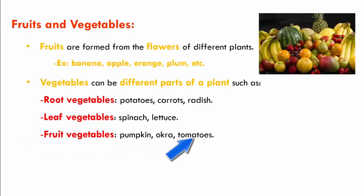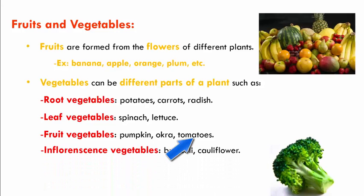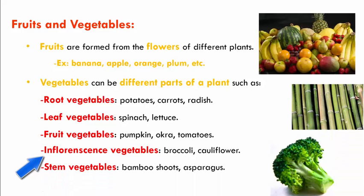Did you know tomatoes were fruit vegetables? We all thought it was just a vegetable. However, tomato is also known as a fruit vegetable. Inflorescence vegetables such as broccoli and cauliflower are called inflorescence vegetables because they are a part of the flower of that plant. Next, we have stem vegetables such as bamboo shoots and asparagus.